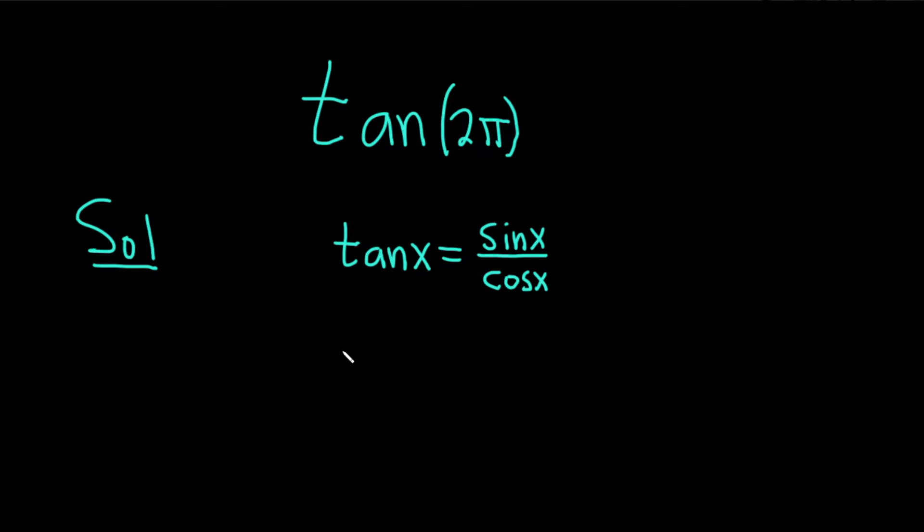And when x is 2π we just get tangent of 2π and that's equal to the sine of 2π over the cosine of 2π.